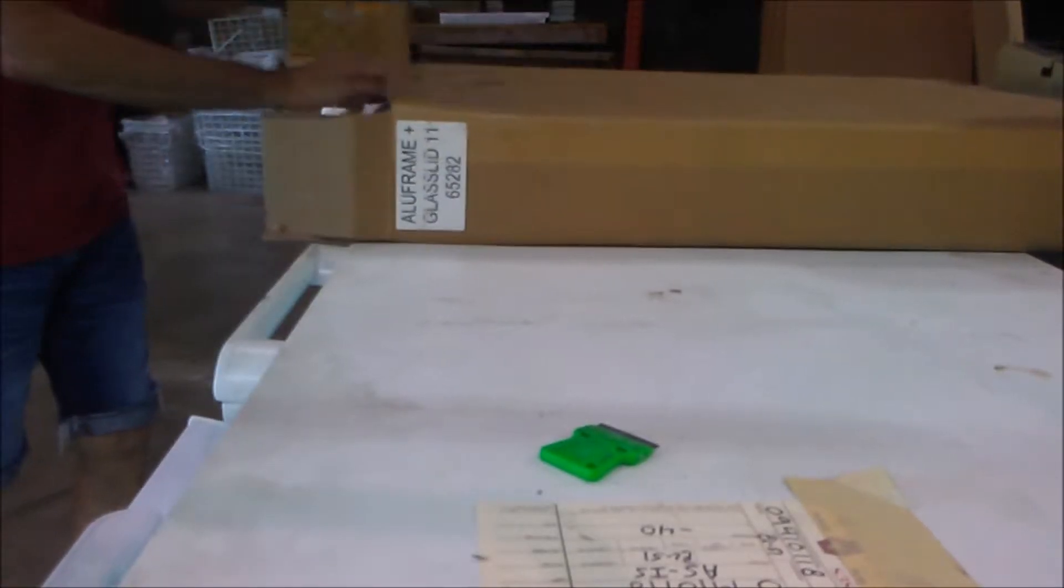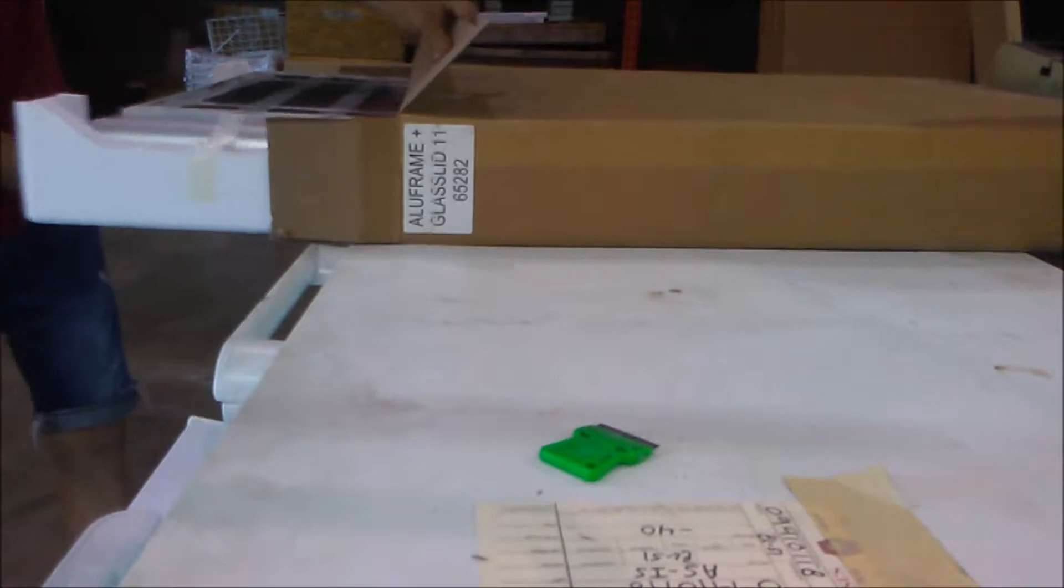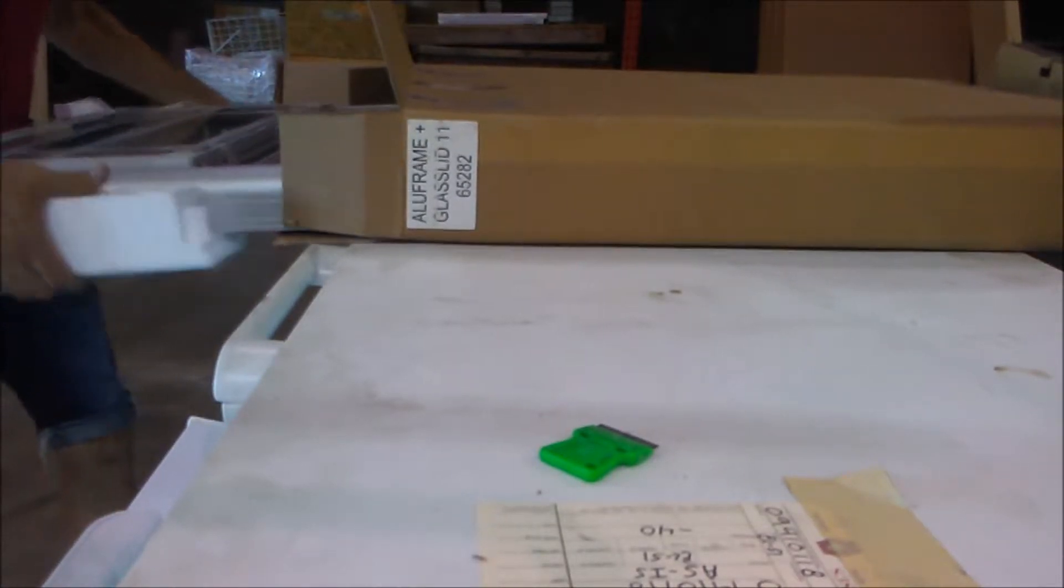Now that the freezer is prepped, we can go ahead and unbox our new rail. Simply pull it out of the box, and then just set it to the side so that the rest of the packing material can be removed.